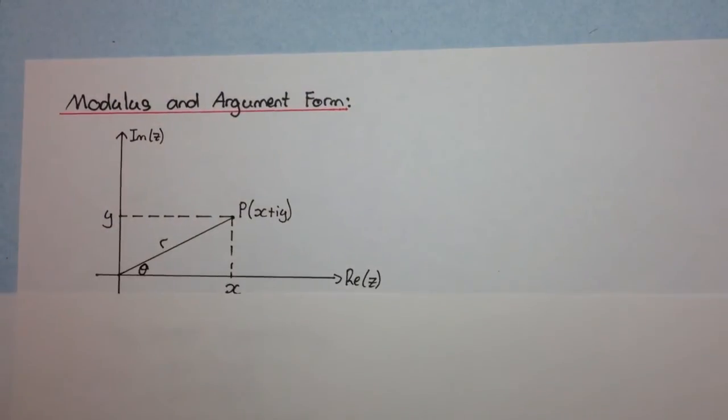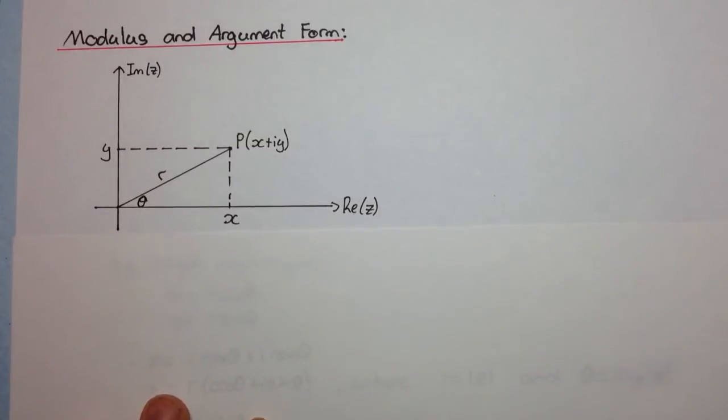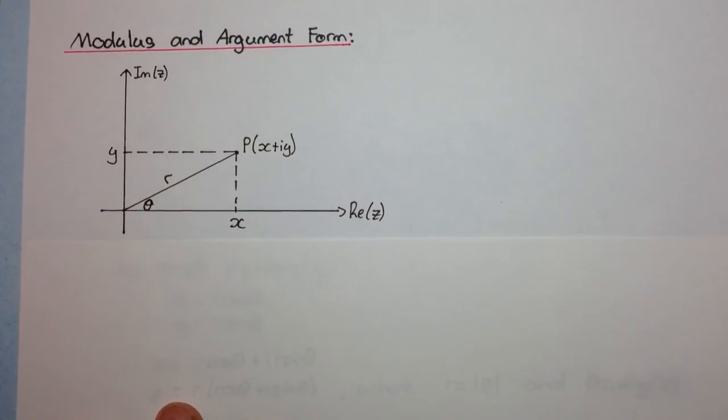So now we get into the modulus argument form of a complex number. So I've just drawn this diagram again.